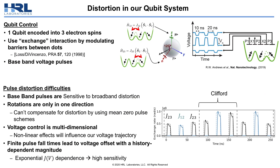Before I get into how we can correct for control distortion, it's probably important to understand how we control our qubits. One qubit is encoded into three electron spins, and we use the exchange interaction — we modulate the tunnel barriers between neighboring dots to induce rotations on our qubit. Because we control both the electron occupation as well as the nominal tunnel coupling using DC voltages, it requires us to use baseband voltage pulses for qubit control.